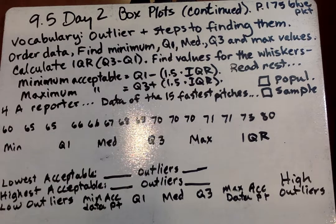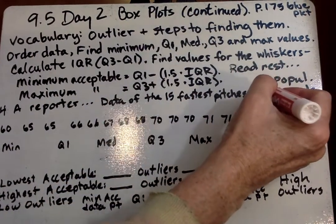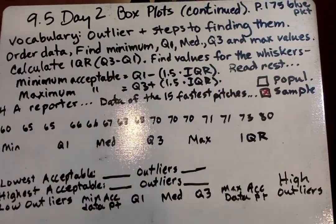Is that the population data or sample data? Data of the 15 fastest pitches. They didn't take data from all the pitches, so that is going to be a sample of all the pitches, the 15 fastest.